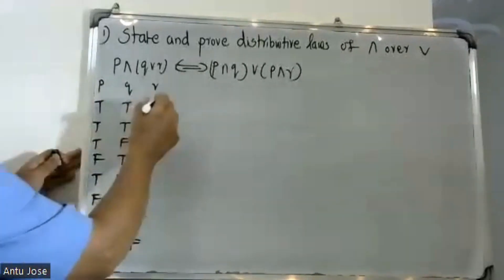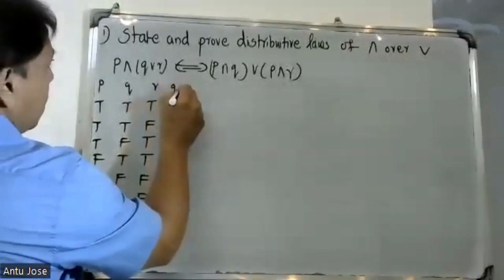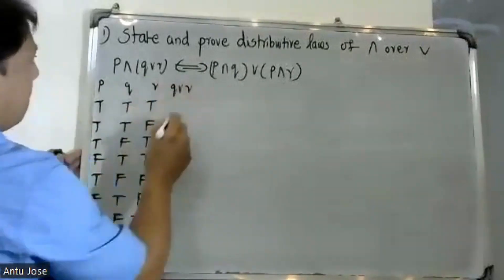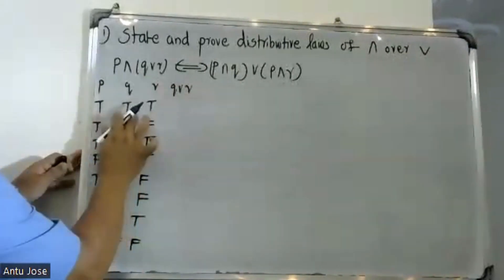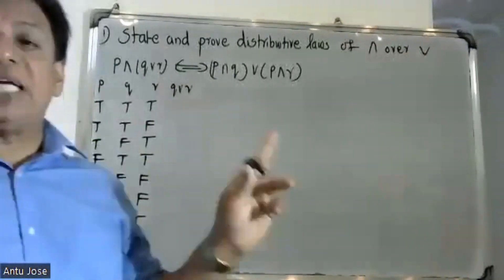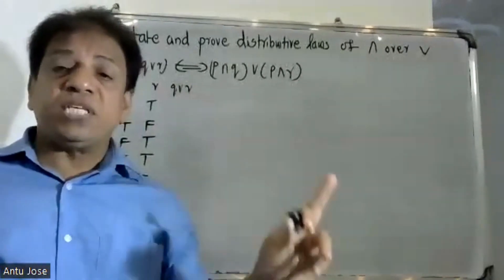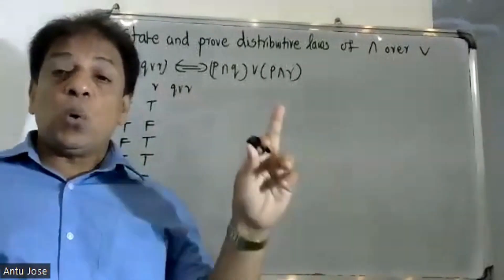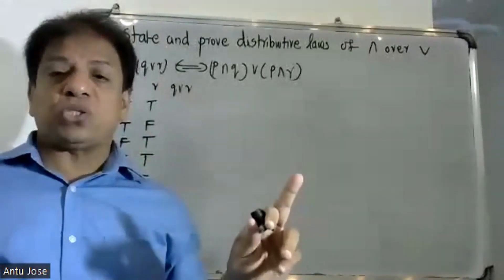For the truth table for Q or R, only one case it will be false — all other cases will be true.